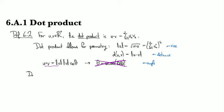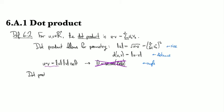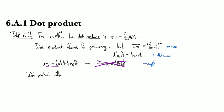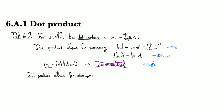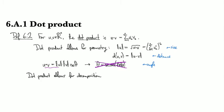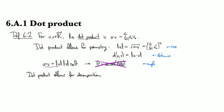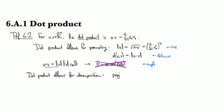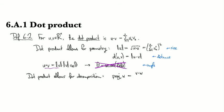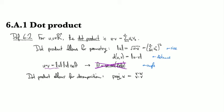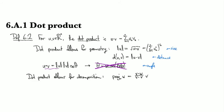The dot product allows for decomposition. We can break a vector down into its component bits, and we can do that in a nice and methodical way. What I'm talking about here is the fact that we can use dot product to define the projection. So the projection of w onto v is going to be v dot w over v dot v times v.